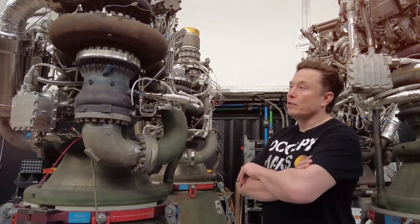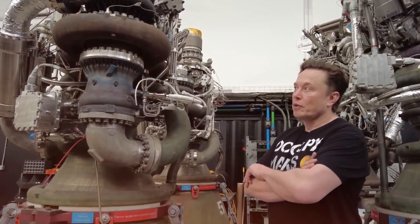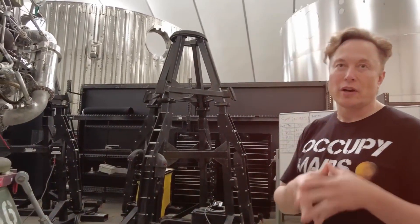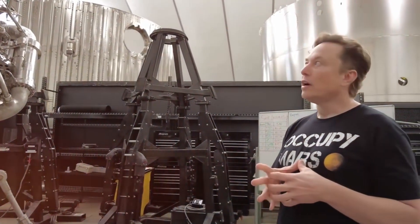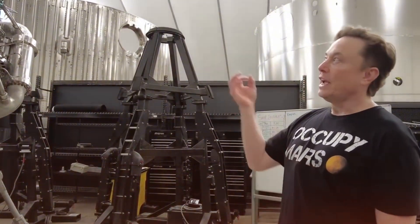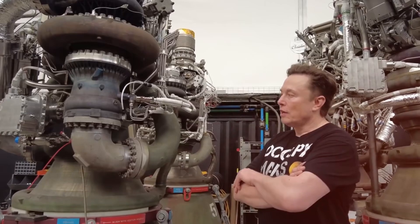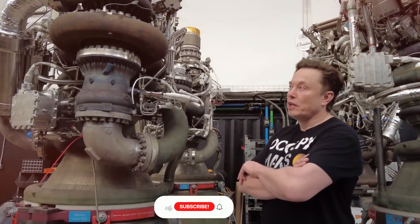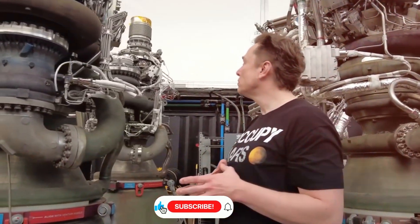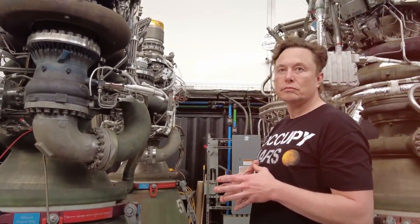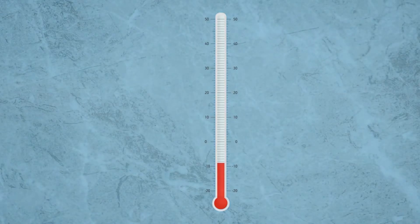One of the most revolutionary aspects of Raptor 3 is its approach to thermal management. Traditional rocket engines rely on hefty heat shields to protect their components from the extreme temperatures of rocket exhaust, often exceeding 3000 degrees Celsius. SpaceX's engineers took a different approach, developing an integrated regenerative cooling system that protects the engine without the need for external shielding. This system represents a quantum leap in thermal management technology.